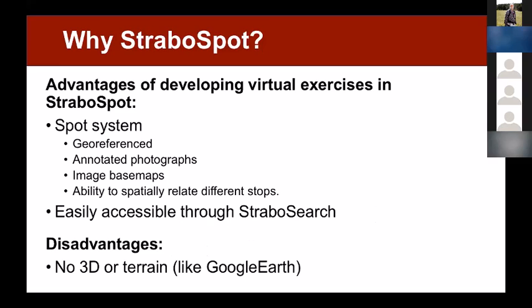The short version is there are advantages and disadvantages of using Strabo Spa. What was really nice about using it for virtual teaching was it's geo-referenced. The ability to annotate photos — not just the person doing it, but the students could annotate the photos. Using image base maps and going back and forth. And the idea of spatially relating field trip stops — students get out of the van, they wake up and have no idea where they are. A lot of people defaulted to Google Earth because of the 3D visual advantages, and Strabo Spa does not have that ability.